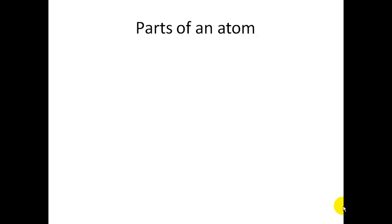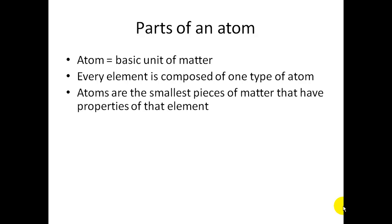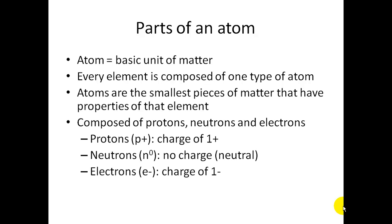The next part of Section 2.1 are the parts of an atom. Definition: An atom is the basic unit of matter. Every element that you are going to learn the symbols for is composed of one type of atom. Atoms are the smallest pieces of matter that have the properties of that element.